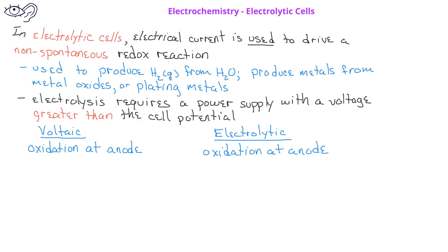However, while in voltaic cells the anode is usually considered to be negative, for electrolytic cells, the anode is connected to the positive battery terminal.